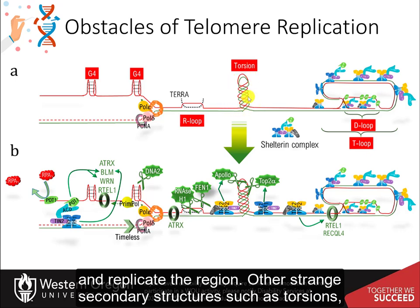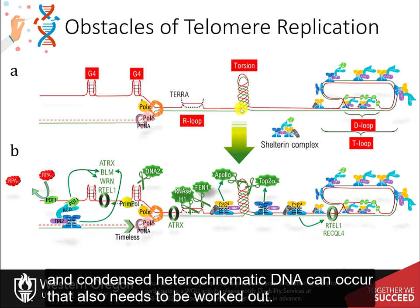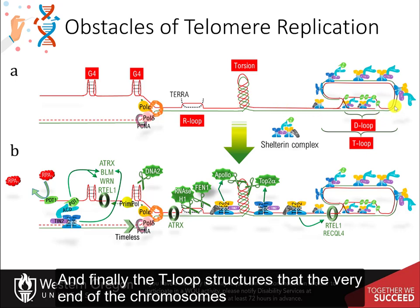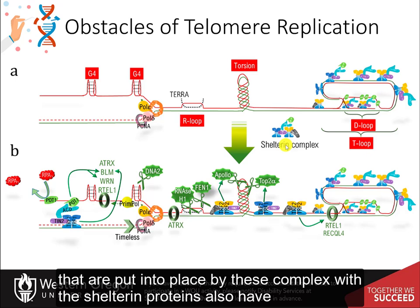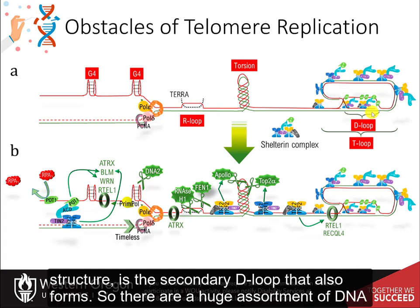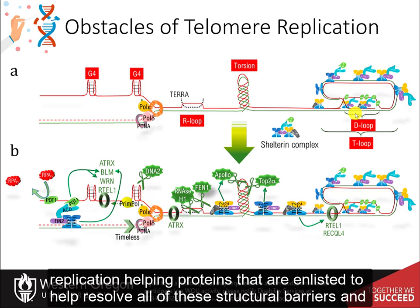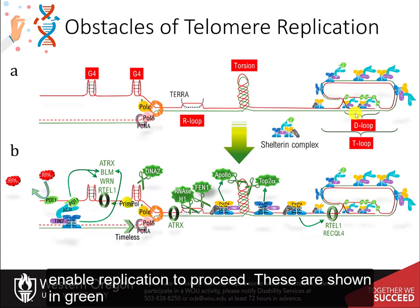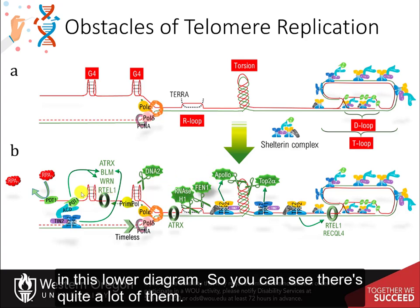Other strange secondary structures, such as torsions and condensed heterochromatic DNA, can also occur and need to be worked out. Finally, the T-loop structures at the very end of the chromosome, put in place by the shelterin protein complex, also have to be resolved to allow for replication of this region. Intertwined in this T-loop structure is a secondary D-loop that also forms. There are a huge assortment of DNA replication helper proteins enlisted to resolve all of these structural barriers, shown in green in the diagram.